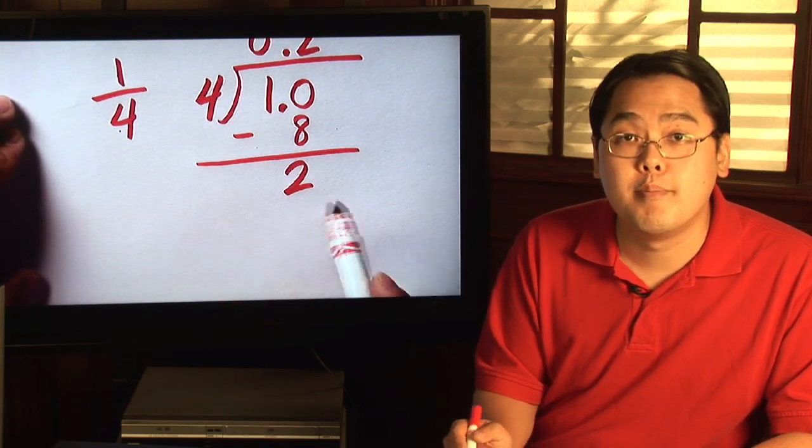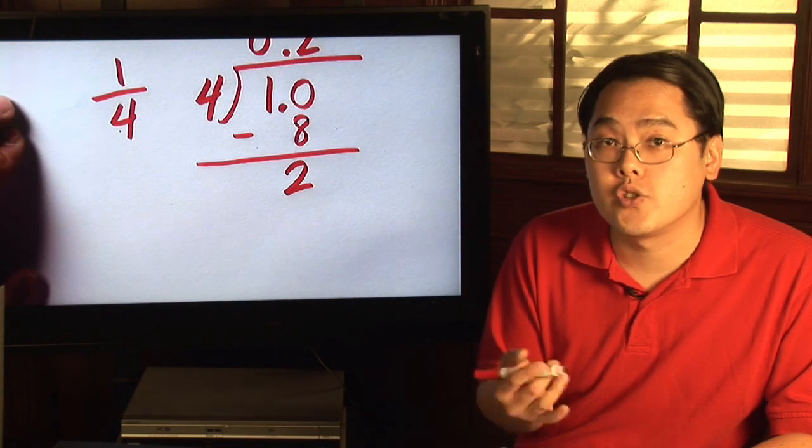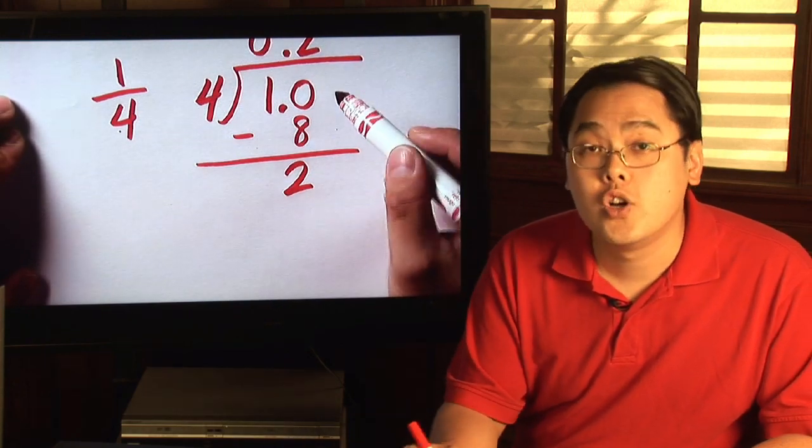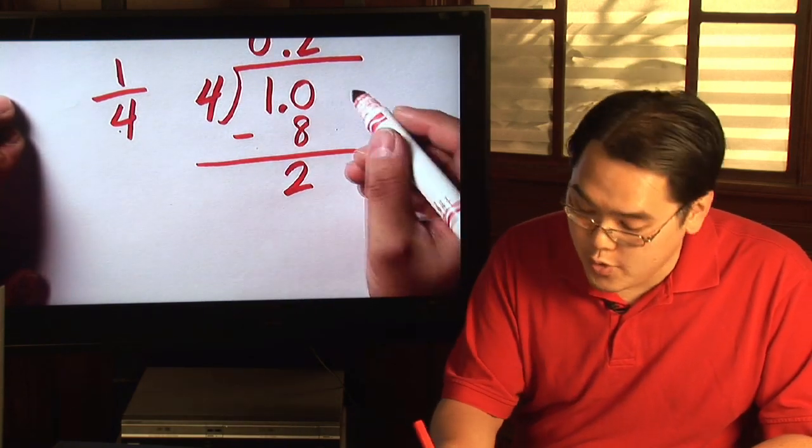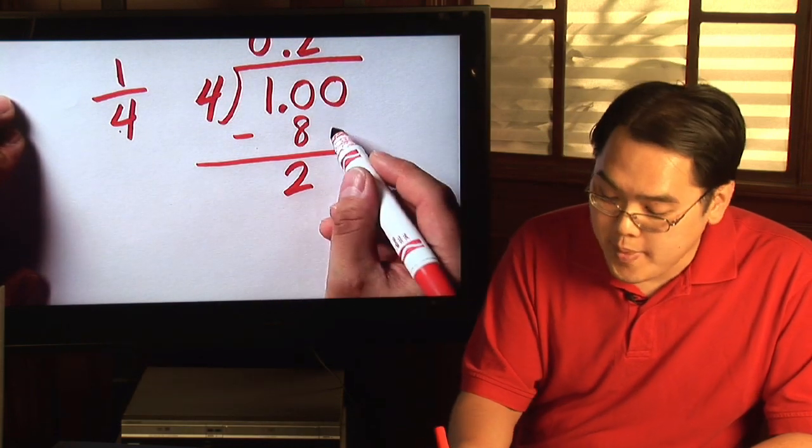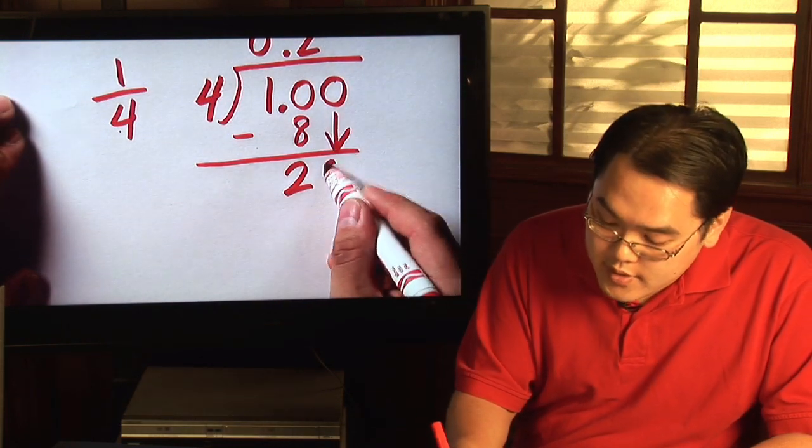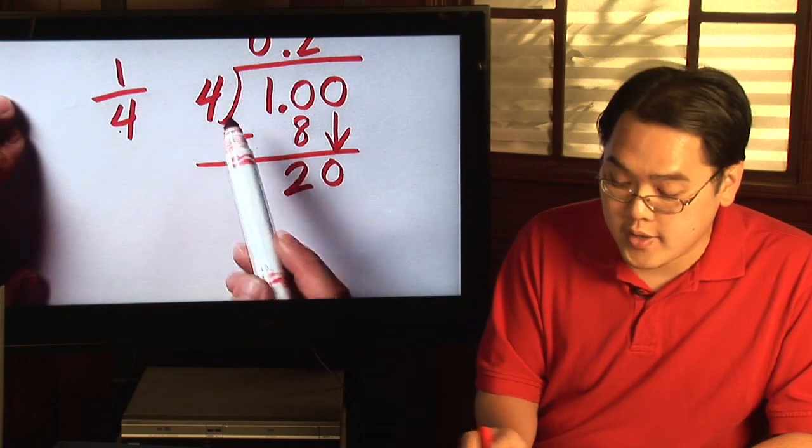Now, we know four doesn't go into two but you don't have an exact answer yet so you're going to try for one. Add another zero and just like long division, bring down the second zero and then repeat.